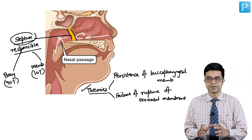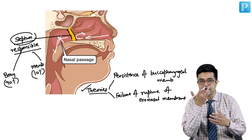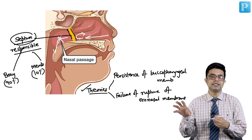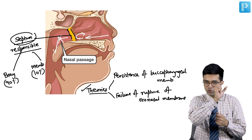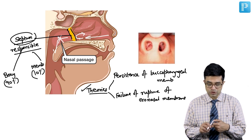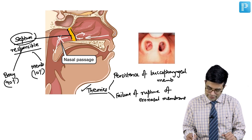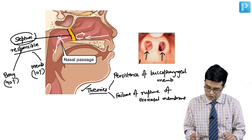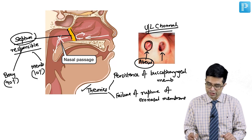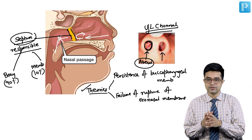Choanal atresia can be apparent from anterior rhinoscopic examination, or sometimes a proper anterior rhinoscopy and CT scan are required to identify it, depending on the length of the septum and whether it is visible from the outside. A photograph showing the condition demonstrates that one side is patent while the other shows atresia — an example of unilateral choanal atresia.